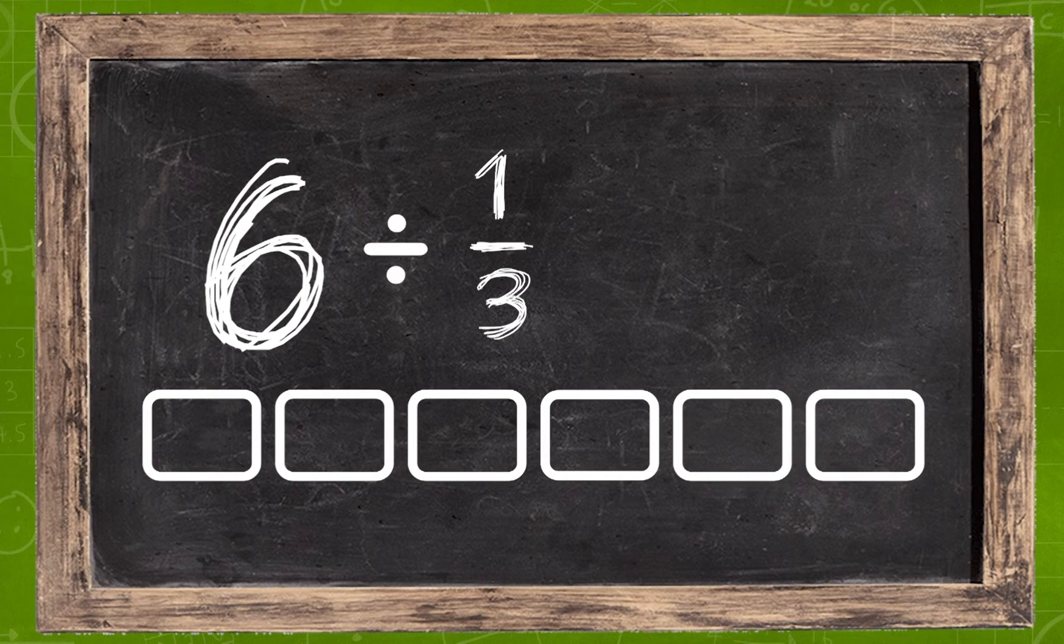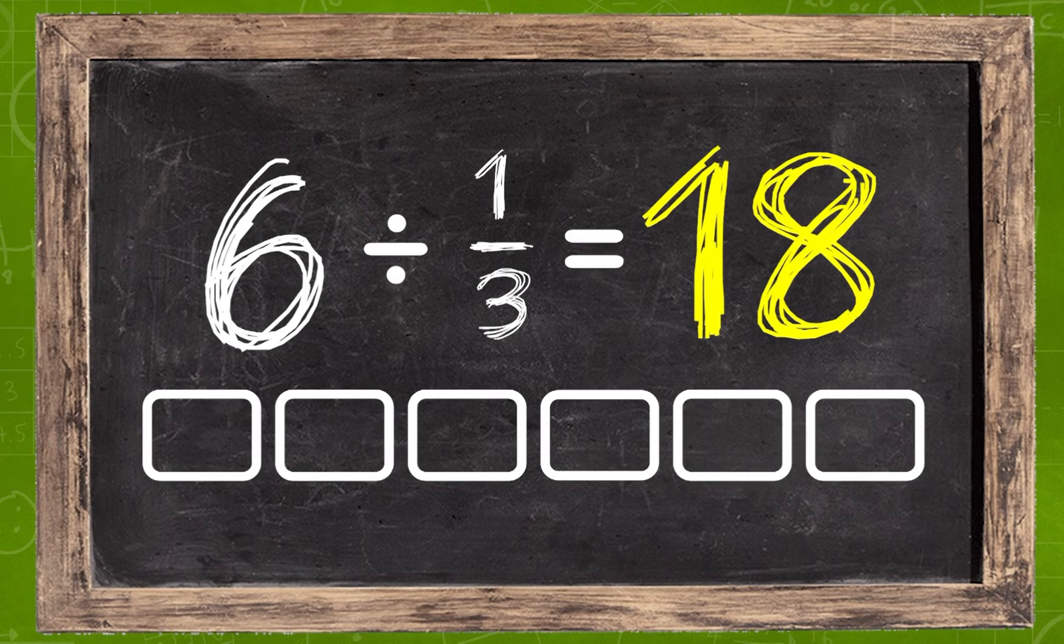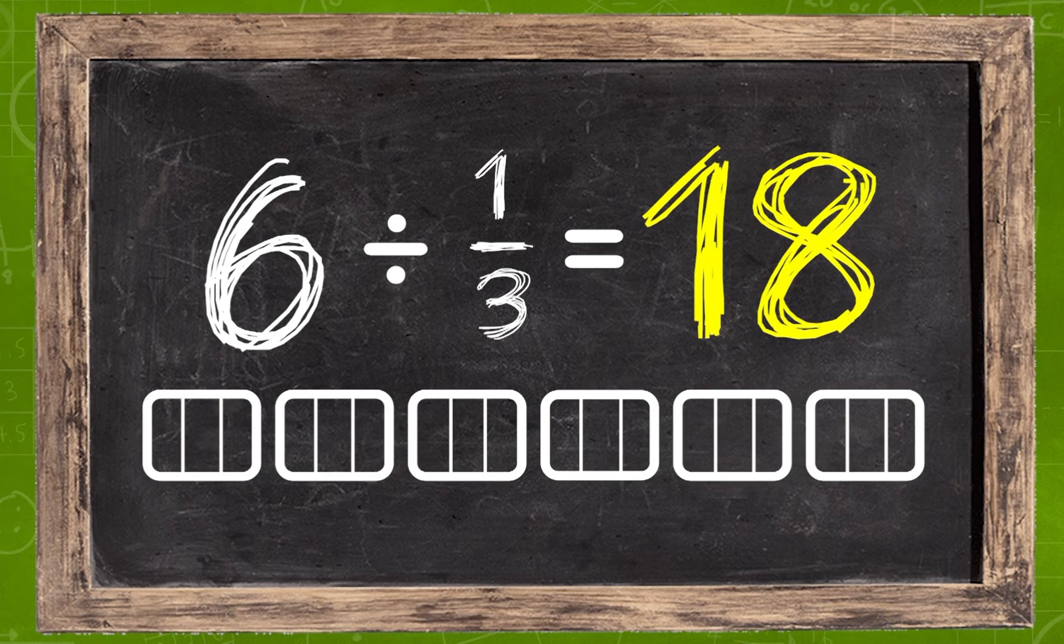If you divide 6 by 1 third, you get 18 third-sized pieces. So you can see from the pictures why when you divide 6 by a fraction, you would multiply 6 by the denominator of the fraction.